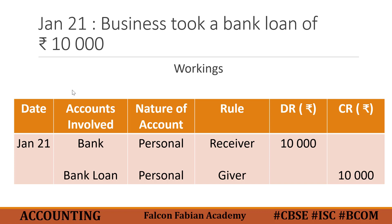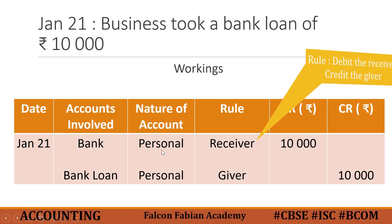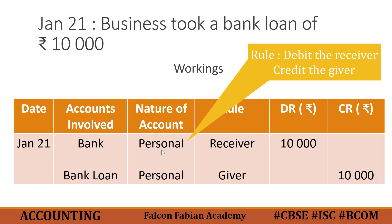I would recommend you to watch that video also. The date is January 21, and the two accounts are bank and bank loan, because this bank loan is deposited in the business bank account. Bank is an organization, and whenever it is the account of an individual or organization, the rule for personal account is applied. The rule is: debit the receiver and credit the giver. The business bank account is receiving the money; therefore, it needs to be debited by 10,000.